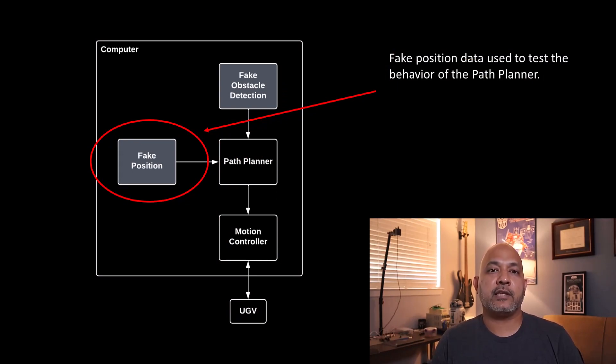...I could generate some bad GPS data or repeating GPS data and feed that into my path planning algorithm. I don't actually need simulation and I don't actually need real GPS data — I could just take a single point and feed that into my algorithm.